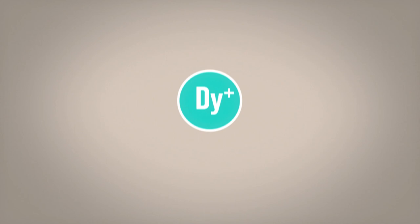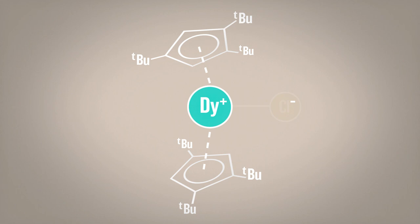What I did was I made a compound where there was dysprosium in the middle with two of these five-membered rings on it and then a chloride atom also attached. That sort of compound has been known for a very long time.